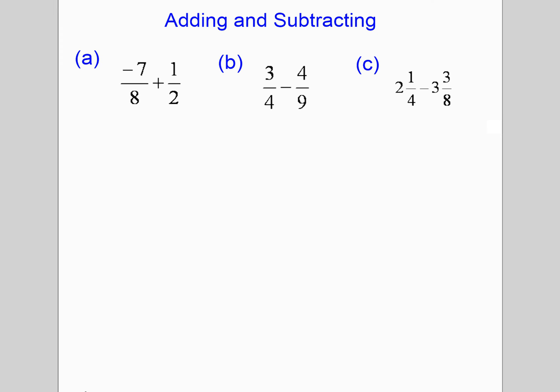For adding and subtracting, my advice is to always put the negative sign on the numerator — it makes things a lot easier. The steps are the same: get a common denominator, then add or subtract and simplify. Here, a common denominator is 8. Whatever you do to the bottom, you do to the top: 2 times 4 is 8, and 1 times 4 is 4. Be careful — this is negative 7 plus 4, not 7 plus 4. So the answer is negative 3 over 8. Some of you may still need to practice integers if you're struggling with adding and subtracting them.